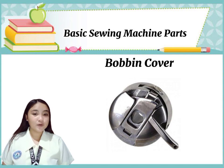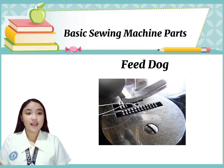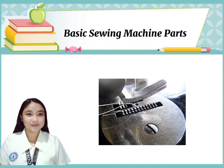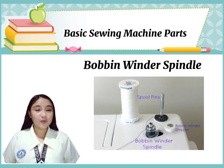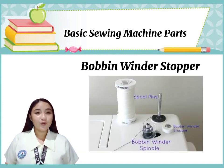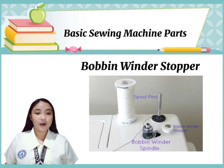A needle pushes the thread through the fabric to form a stitch. Third, feed dog — the teeth directly under the presser foot that feed the fabric forward while sewing. Fourth, bobbin winder spindle — the bobbin is placed here during winding.